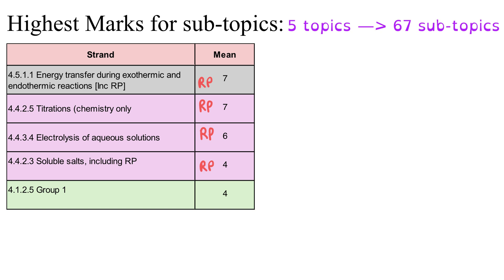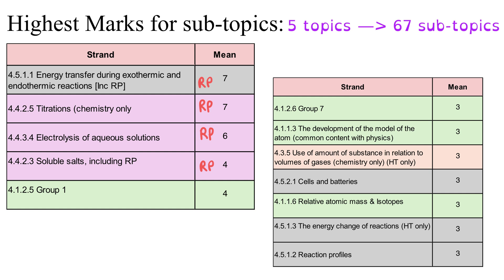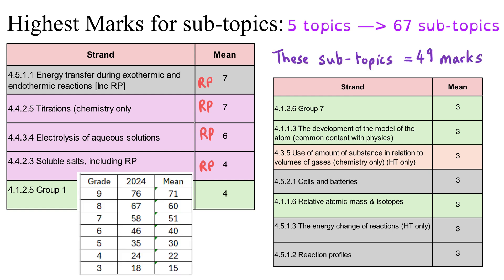In fourth and fifth place, tied on 4 marks on average each year, are the soluble salts preparation required practical and the properties of the Group 1 elements. There are then seven subtopics each carrying 3 marks on average each year. I'm showing less than 20% of those 67 subtopics here, but together they carry on average 49 marks each year — almost enough to achieve a grade 7 just on this small portion of subtopics alone. So in terms of prioritising your revision, this is a really good place to go.